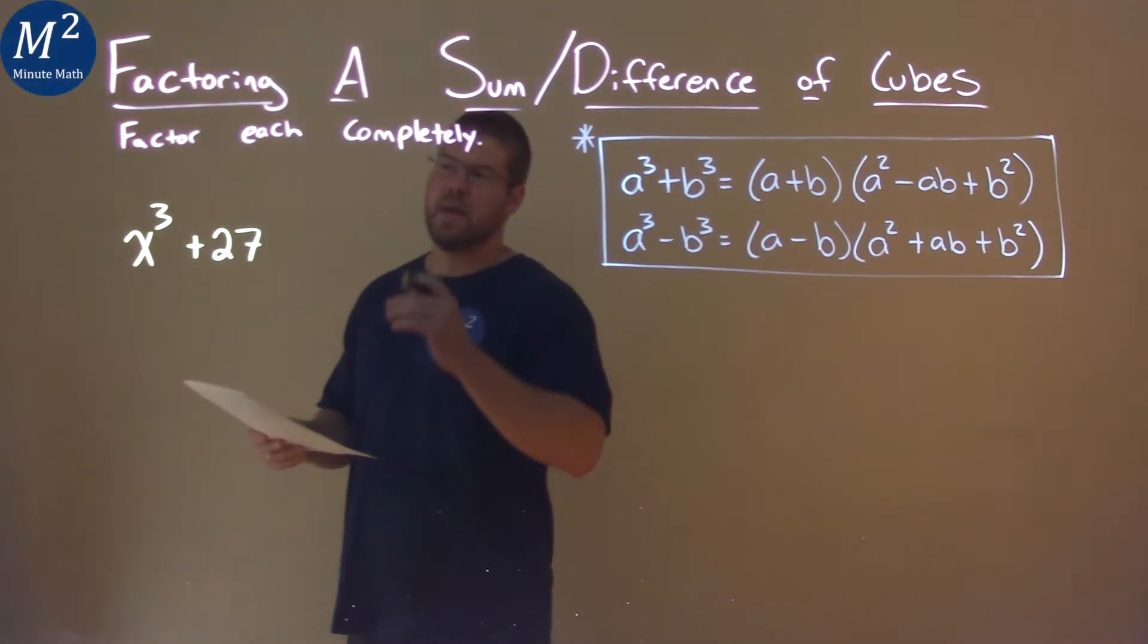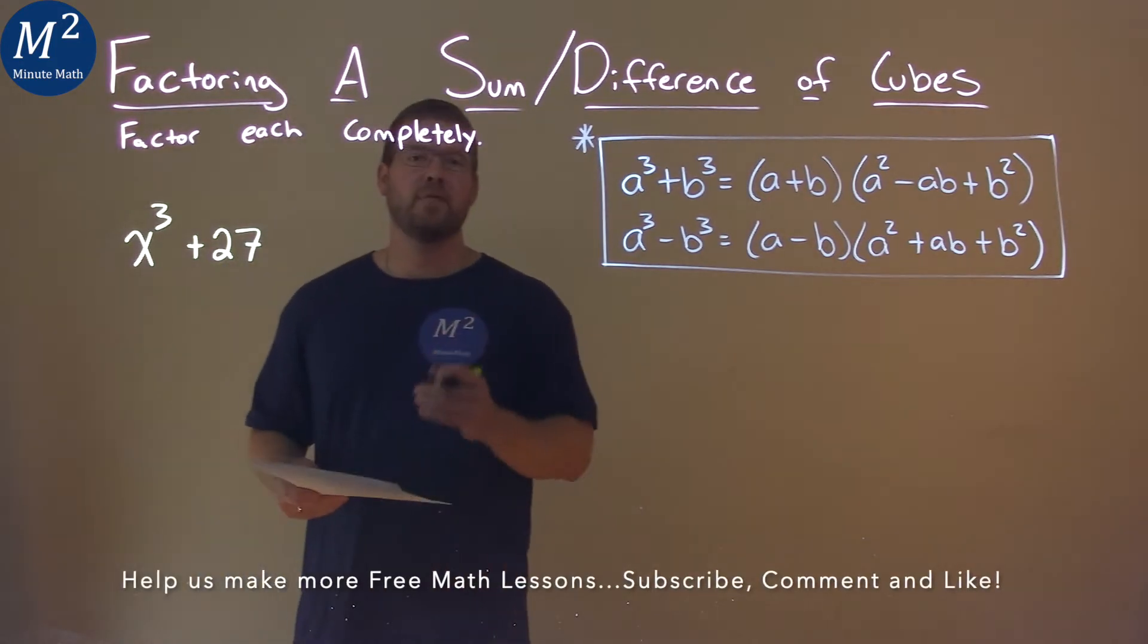We're given this problem: x³ + 27, and we need to factor this completely.